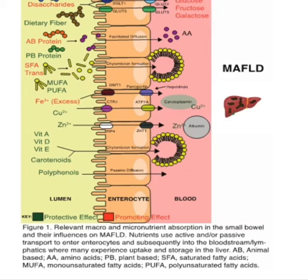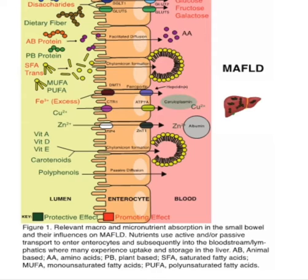In the literature, it is quite evident that diets high in saturated fats and simple sugars have detrimental effects on the liver as well as the rest of the body. Whereas dietary fiber, most polyunsaturated fatty acids, monounsaturated fatty acids, and many micronutrients are believed to have protective effects in MAFLD. Micronutrients are often characterized as having antioxidant, anti-inflammatory, immunomodulatory, and anti-fibrotic properties in MAFLD.